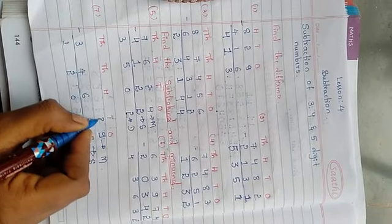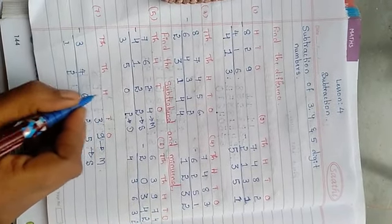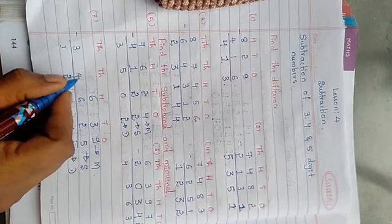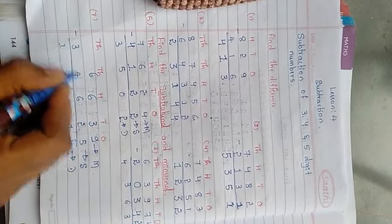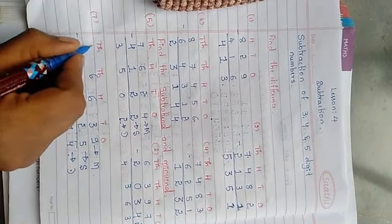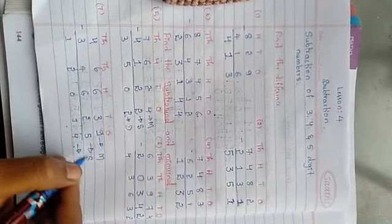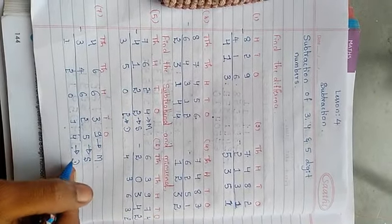2 plus 1 is 3, 6 plus 0 is 6, 4 plus 2 is 6, 3 plus 1 is 4. Finding minuend is very easy. Just you are doing addition of subtrahend and difference.